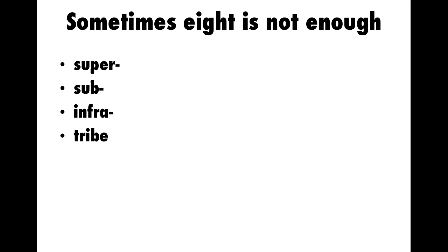Sometimes eight levels of taxonomy is not enough. In some species or lineages, there's been so much diversification that we need to include more levels to make sense of it. So we can use prefixes like 'super' — meaning over and above — 'sub' meaning under or beneath, and 'infra' beneath that. Sometimes we even have to add another taxonomic level called a tribe, usually found between family and genus.